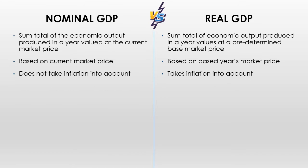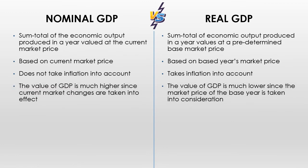Nominal GDP doesn't take inflation into account because current market price already has inflation built in. Whereas real GDP does take inflation into account — that's why we use a base market price. We go back to the year 2000, and any inflation from 2000 until today would not be counted in the price of the product. The value for GDP using nominal tends to be much higher because we're taking today's market prices into consideration, whereas using historical prices they're always going to be a little bit lower.